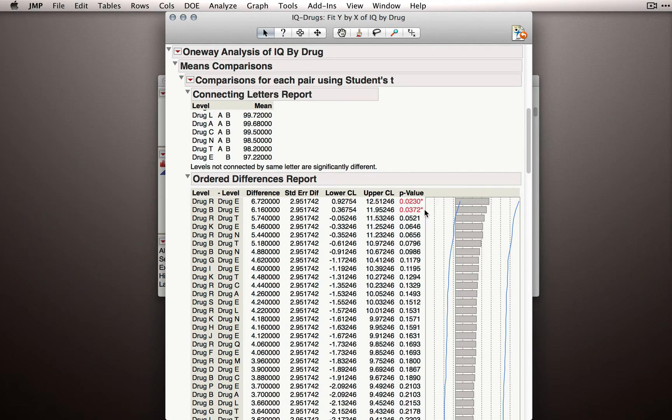What we've just observed is the problem of multiplicity, or in other words, the problem that occurs when we have multiple comparisons. In this case, we had many, many possible tests, and so we actually had many, many opportunities to get a false alarm.